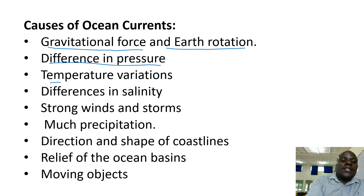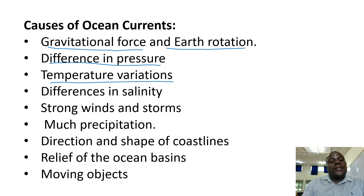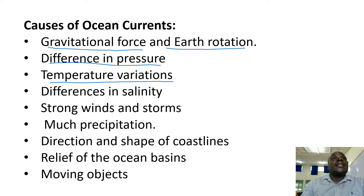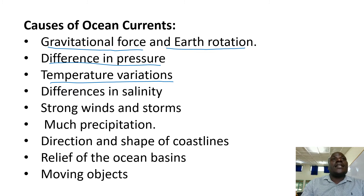Then we have temperature variations — changes in temperature. When oceanic water is hot in terms of temperature, the molecules of oceanic water are light and therefore ocean currents may rise from the oceanic floor to the surface of the ocean. Those are what we call upwelling currents. When temperatures are low, oceanic water might sink because it is dense and heavy, causing currents like downwelling.